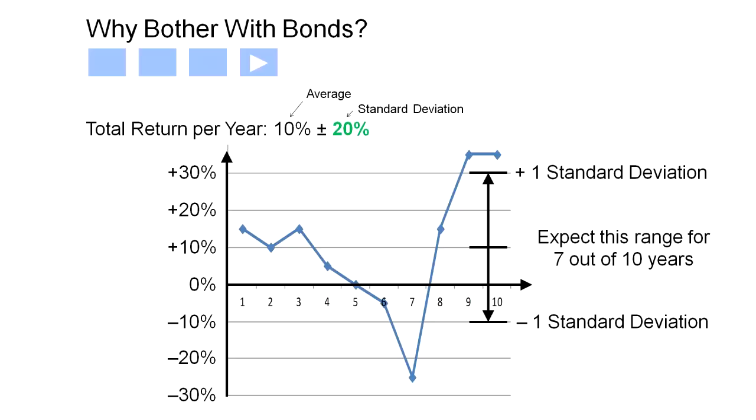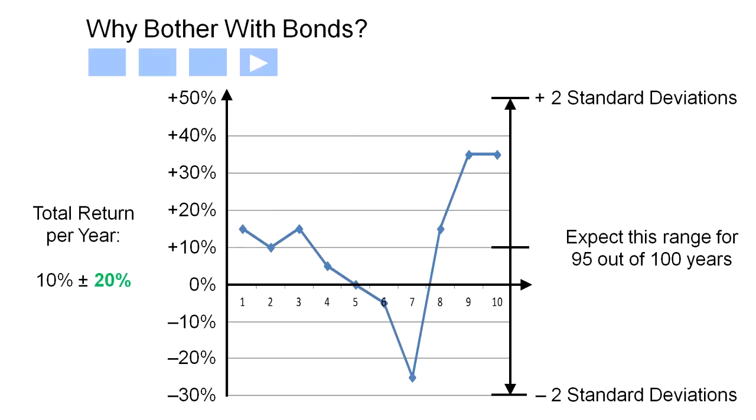It simply means that the total return will be within one standard deviation in either direction, roughly 7 out of every 10 years, or in this case, within the range of minus 10% to plus 30%. Further, it means that the total return will be within two standard deviations for 95 out of every 100 years.